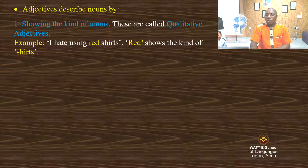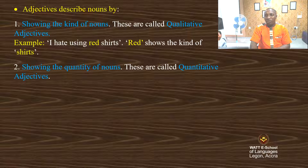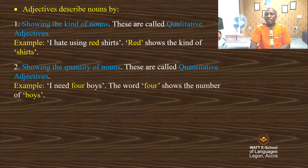Second, adjectives describe nouns by showing the quantity of nouns. These are called quantitative adjectives — they talk about quantity. For example: 'I need four boys.' The word 'four' shows the number of boys.